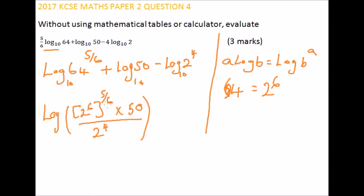Now, 2 to power 6, when you open the bracket here, it will be 2 to power 5. So this is equals to logarithm of 2 to power 5, multiplied by 50, divided by 2 to power 4.